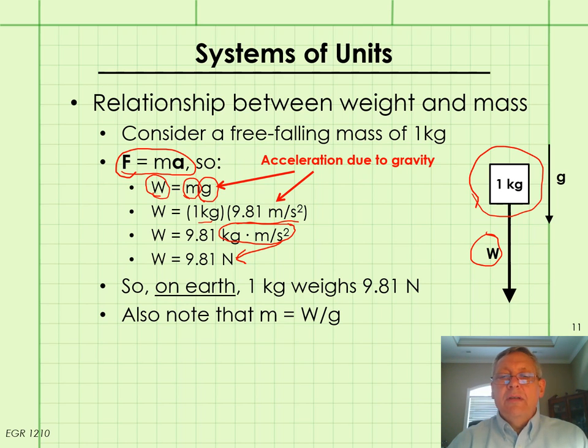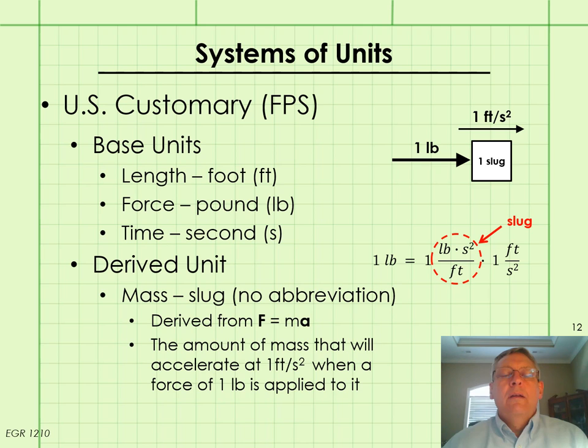So on Earth, one kilogram weighs 9.81 newtons. Note that when the acceleration due to gravity changes for different situations, planets, moons, that the weight of that one kilogram mass is also going to change. Also note here that if we start with the, if we know the weight of the object, but not the mass, we can find the mass by this equation, mass equals weight over the acceleration due to gravity.